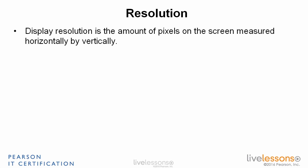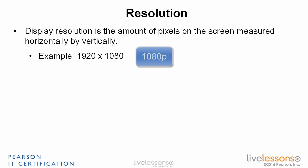Display resolution is the amount of pixels, or picture elements, on the screen, measured horizontally by vertically. The more pixels that can be used on the screen, the bigger the desktop becomes and a user can fit more windows on the display. Display resolution is also known as pixel dimensions. An example is 1920 by 1080 — that's 1920 pixels horizontal by 1080 pixels vertical, also known as 1080p or standard high-definition video.